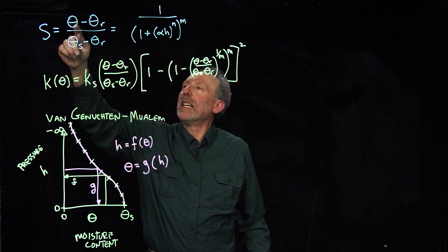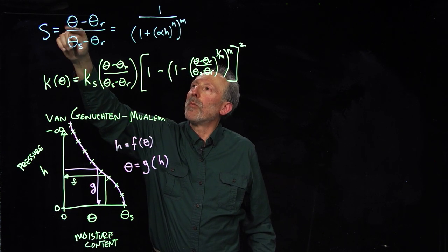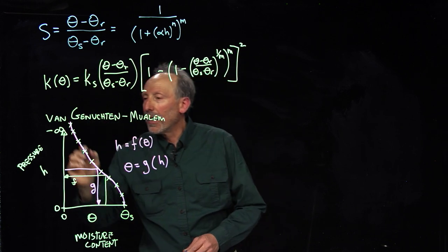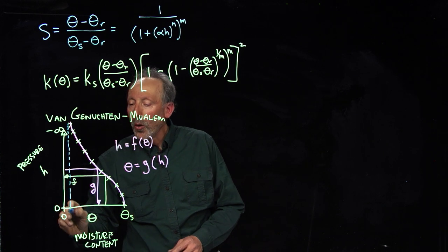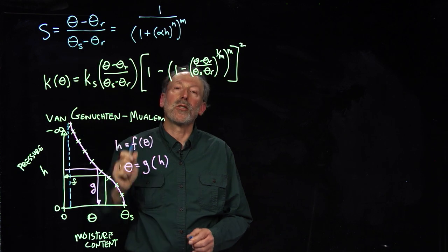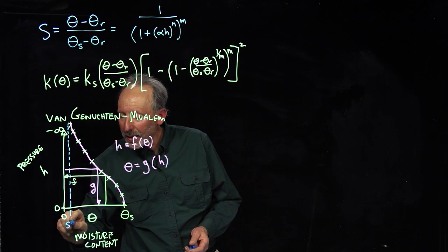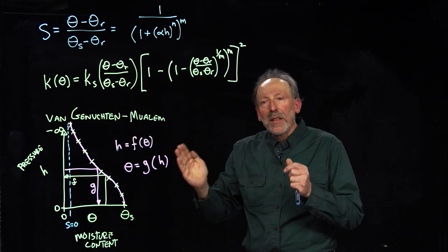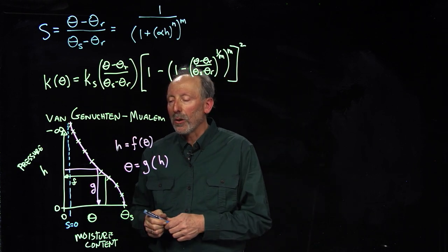And what that's representing is the scaled moisture content. So, the moisture content minus the residual moisture content. So, we have a residual moisture content here. So, we're saying the degree of saturation will be zero if it's at residual, because theta residual minus theta residual is zero. So, our saturation here, S, will equal zero, even though there's a little water in the soil. The movable water, the water that's going to be dynamic, is no longer there.